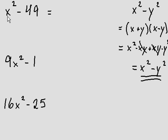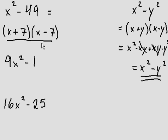So if we have something like x squared minus 49, we can simplify this into x plus 7 times x minus 7. Done and factored.